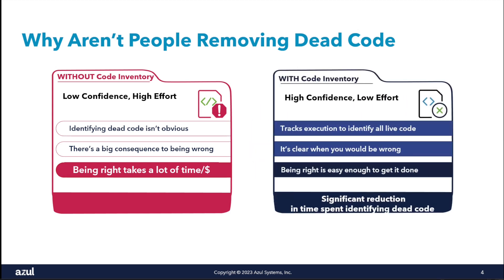What we've done with Azul Code Inventory is we've really improved the level of confidence you can have as to whether or not you actively use code. Instead of having to go through log lines, figure out if a method has executed, or do some level of static analysis, we've repurposed the JVM's first-call execution to track what methods run in production over time. If you see a lot of methods that never appeared in your code inventory, it's code you can probably remove to really decrease your maintenance cost — and maybe not have to update all the unit tests that test that code, because unit tests could be the only thing keeping that code alive.